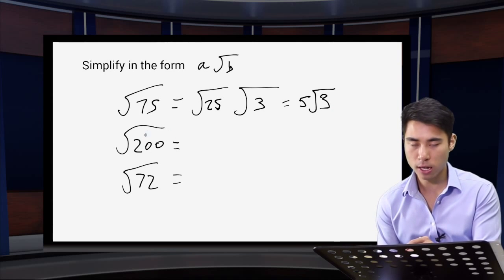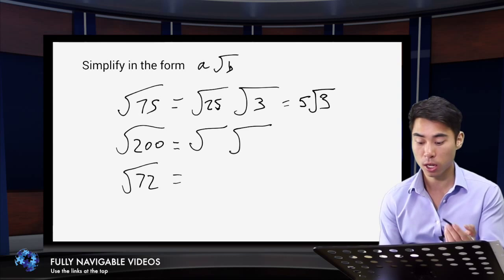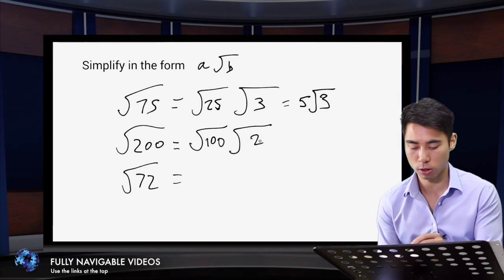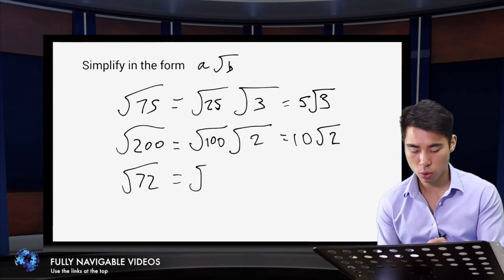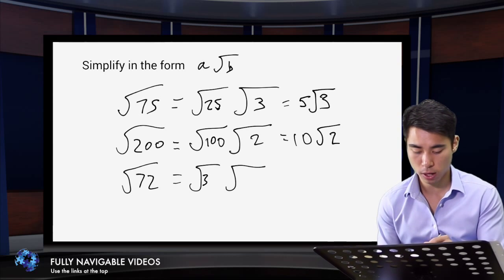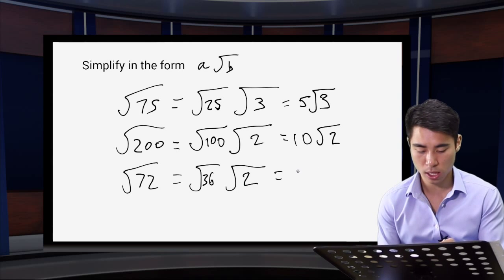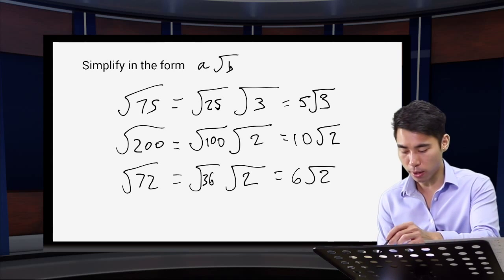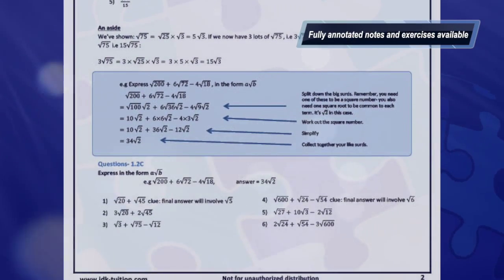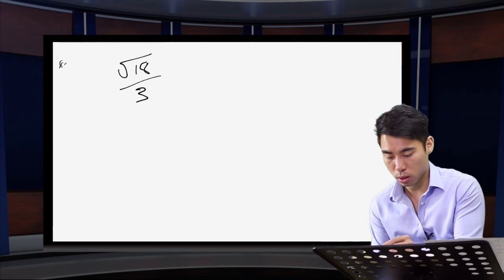You might also be given fractions involving surds and asked to simplify them. Any time a question says 'simplify' and doesn't say 'rationalize the denominator', the first thing you want to think about is breaking down any numbers underneath the square root sign. So for root 18 over 3: which square numbers go into 18? Well, 9 does. So root 18 is the same as root 9 times root 2.